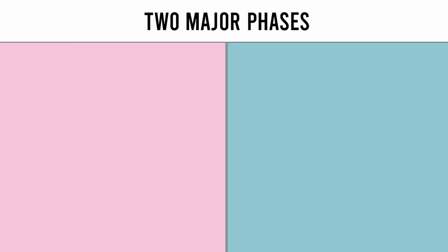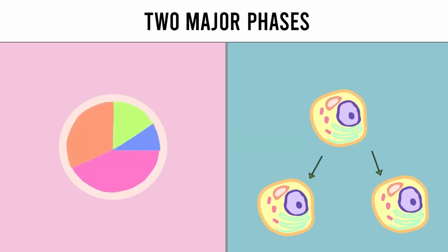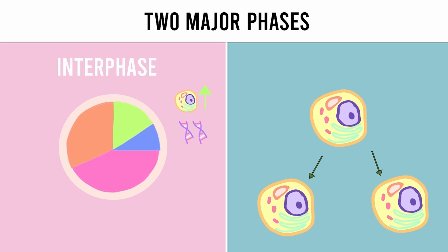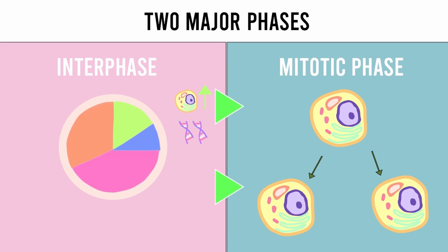This process can be split into two major phases. The first of these phases is known as interphase, during which the cell grows and DNA is replicated. The cell tends to spend most of its time in interphase throughout its lifespan. Once certain conditions within the cell are met, which we will be discussing later in this video, the cell cycle moves on to the mitotic phase, where the duplicated DNA and cell contents are divided and the cell ultimately splits itself into two daughter cells.